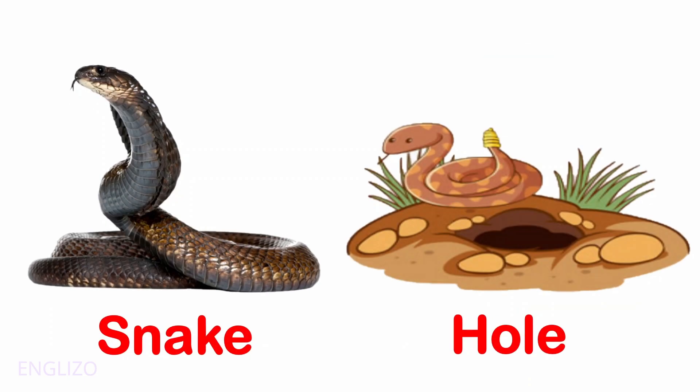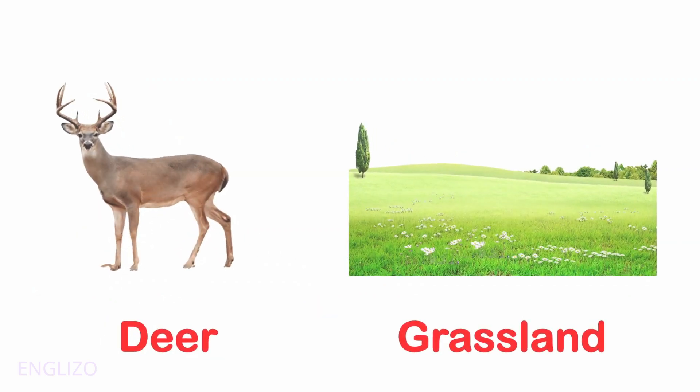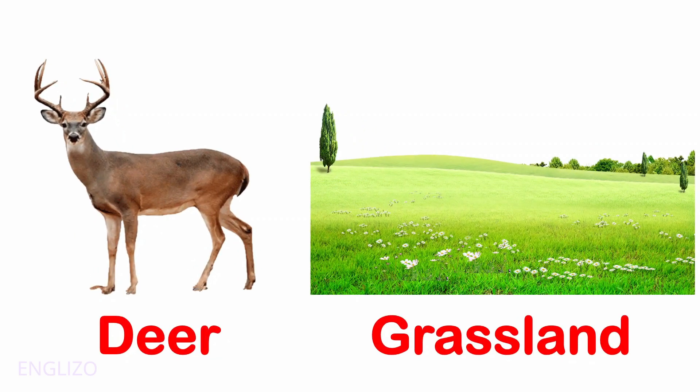A snake lives in a hole. A deer lives in grassland.